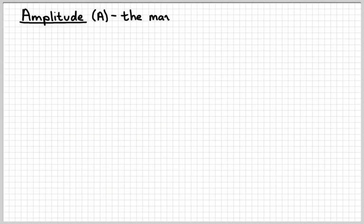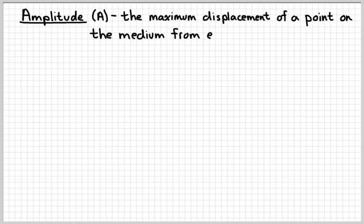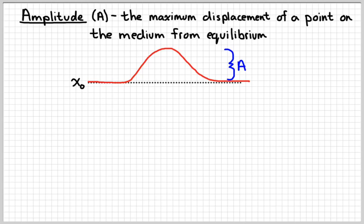So some properties of a wave. We're going to start with the amplitude, which is a word we should be familiar with. Amplitude refers to the maximum displacement of any point on the medium from its equilibrium position. So if I draw a dashed line like that to represent the equilibrium position, or x0, and I have a wave that looks like this, then this distance right here represents the amplitude.